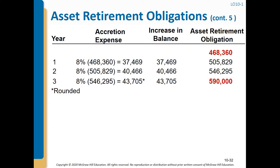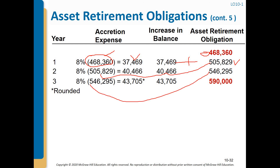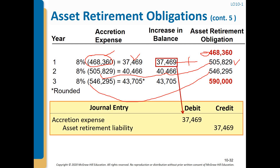The asset retirement obligation at the start is our initial liability. In year one, 8% of this amount is the accretion expense. The sum of the asset retirement obligation plus this interest gives the balance at the end of year one. In year two, interest is calculated on the new balance. Every year, after calculating the accretion expense, we increase the asset retirement liability by that amount: debit Accretion Expense and credit Asset Retirement Liability.